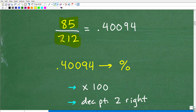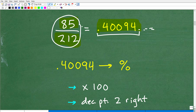You could do this by hand, but that's unnecessary. If you're allowed to use a calculator, go ahead and use that calculator because it is a tool. If we take 85 and divide it by 212, you're going to get the decimal 0.40094. There are other decimal places, but we'll just keep these digits. So now what we've done is convert a fraction to a decimal.